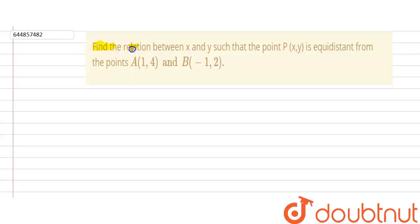In this question we need to find the relation between x and y such that point P is equidistant from the point A which is (1,4) and point B which is (-1,2). So we are given that point P which is (x,y) has equidistant from point A and point B which means distance AP is equal to PB.